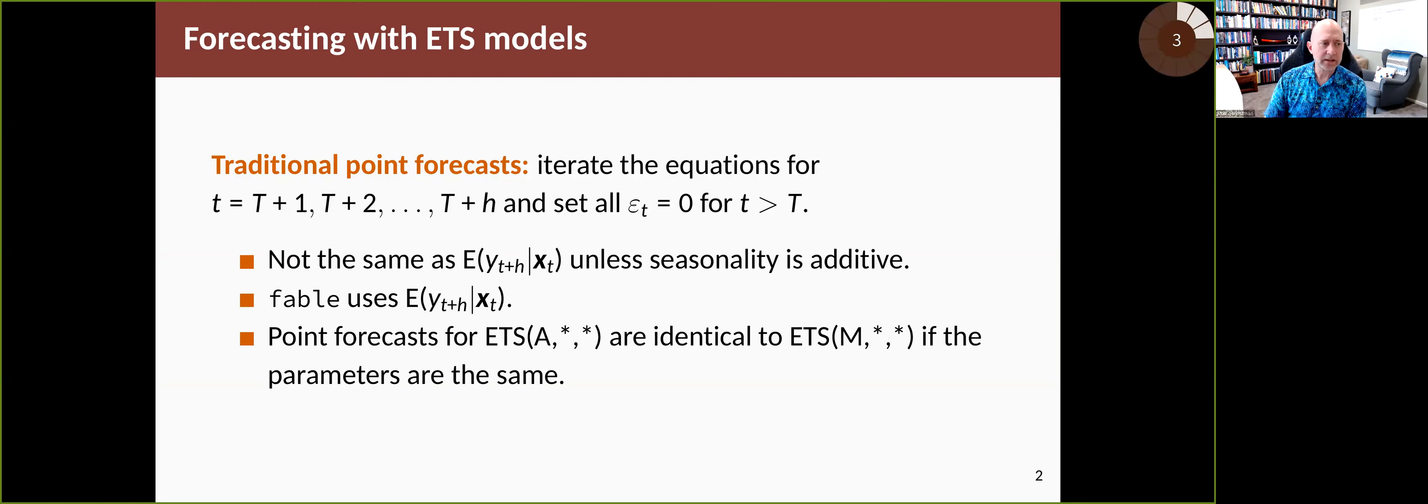That works pretty well when seasonality is additive, but it's not actually the same as the mean of the forecast distribution when seasonality is multiplicative. So instead, Fable does it differently and gives you the true mean of the forecast distribution.